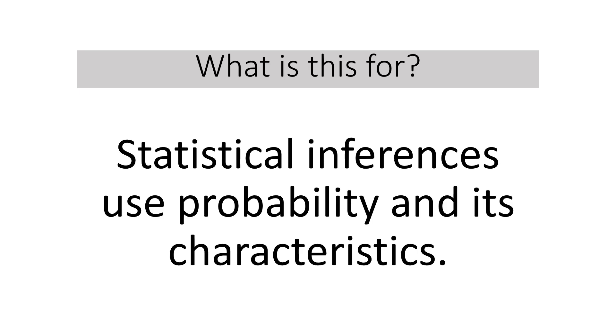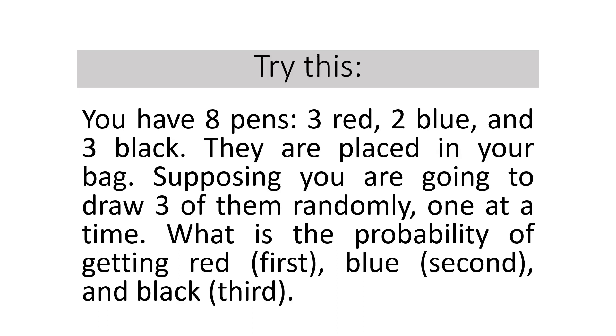Data science often uses statistical inferences to predict or analyze insights from data. Statistical inferences use probability and its characteristics. Knowing probability is important if you would like to properly deal with data science issues or problems. For example, if you would like to make an analysis of the pandemic, you may want to observe the population that is severely affected, mildly affected, or asymptomatic. You may want to predict the likelihood of infecting the very healthy population.